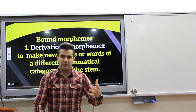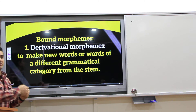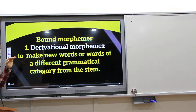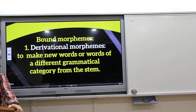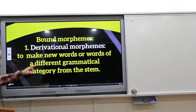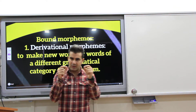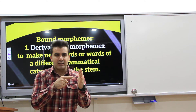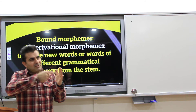And now, bound morphemes. Bound morphemes are also divided into two categories: derivational and inflectional. Derivational morphemes are used to make new words or words of a different grammatical category from the stem. It is bound to the stem, and it either changes the grammatical class of the root or derives a new word from it.